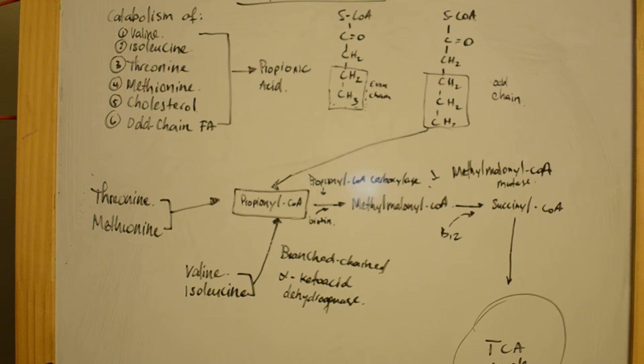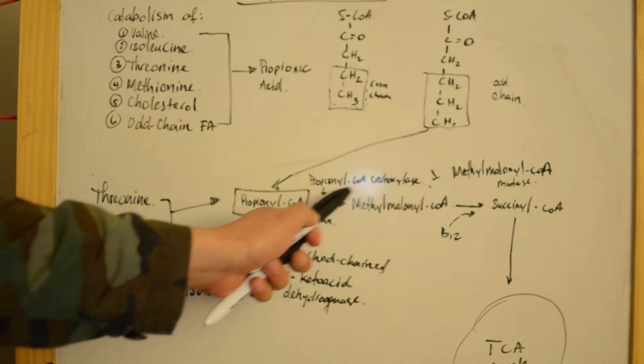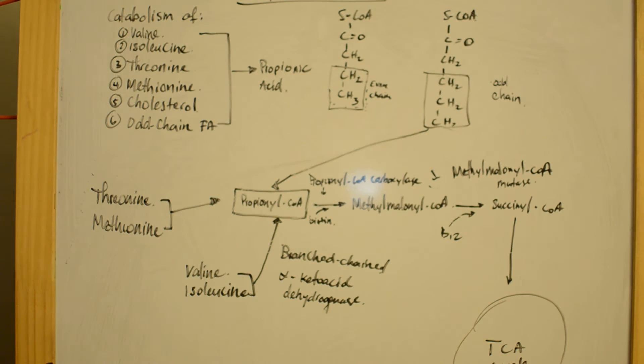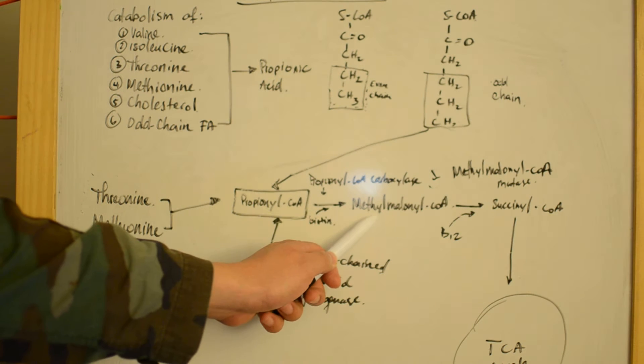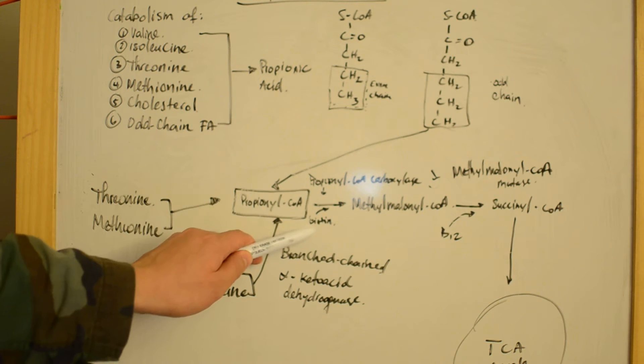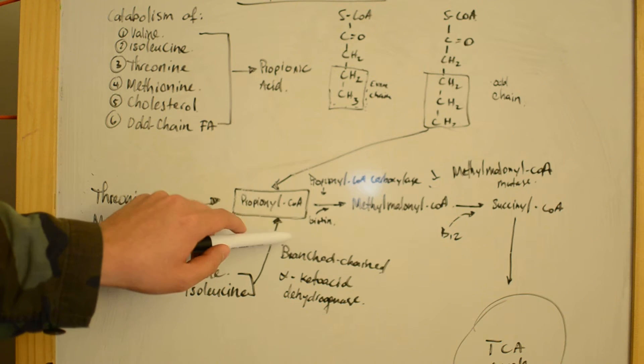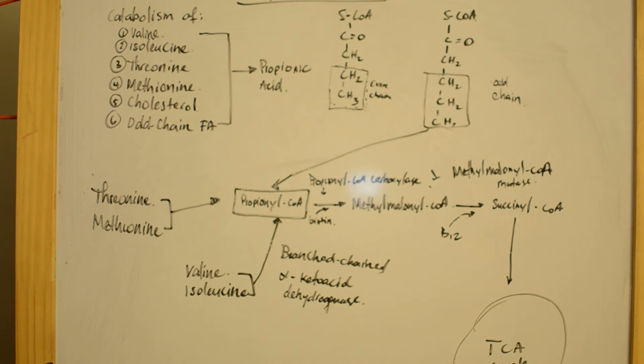Propionic acidemia is a congenital deficiency of propionyl-CoA carboxylase, which is used to convert propionyl-CoA into methylmalonyl-CoA with the help of biotin as a cofactor.